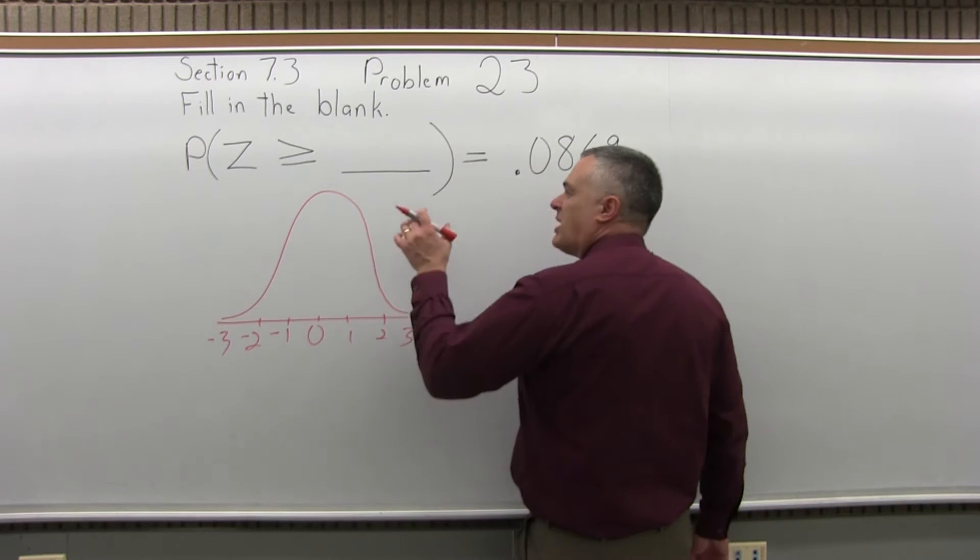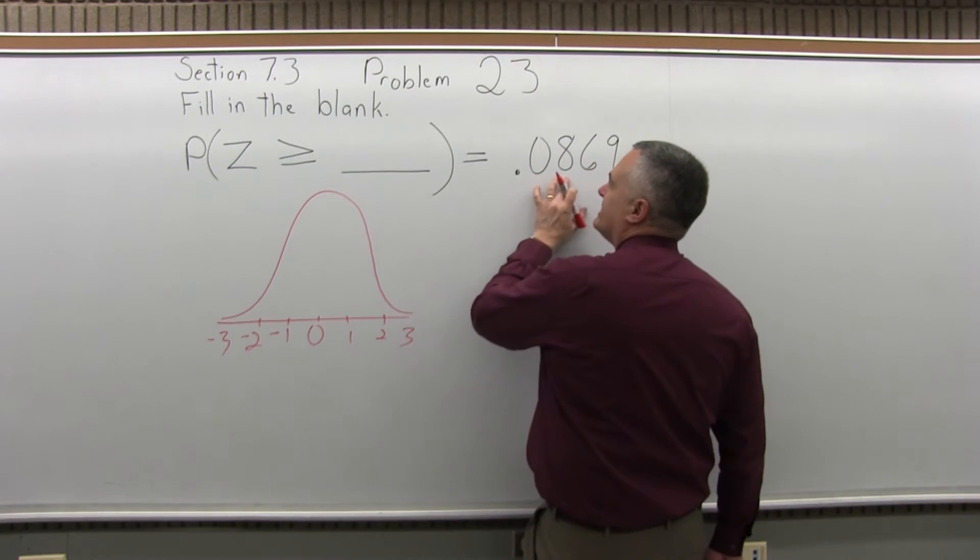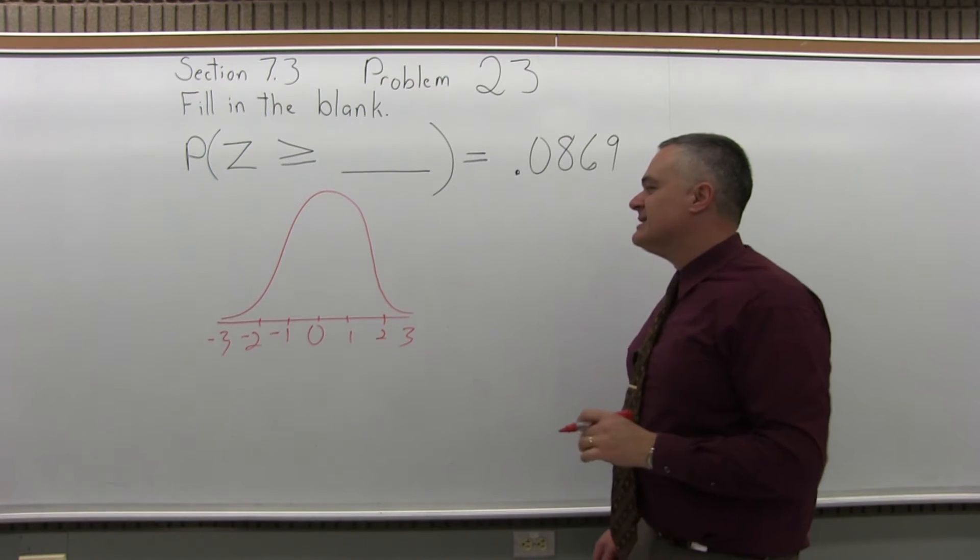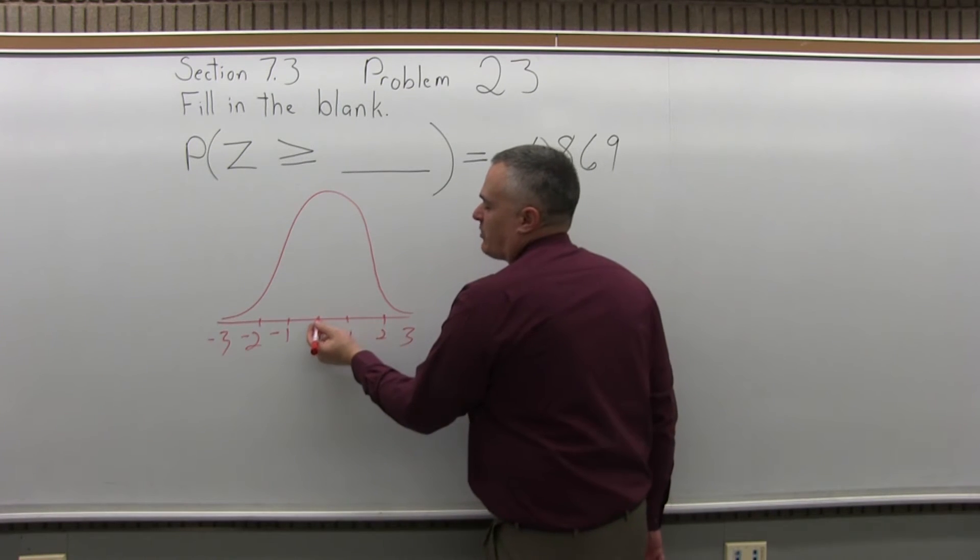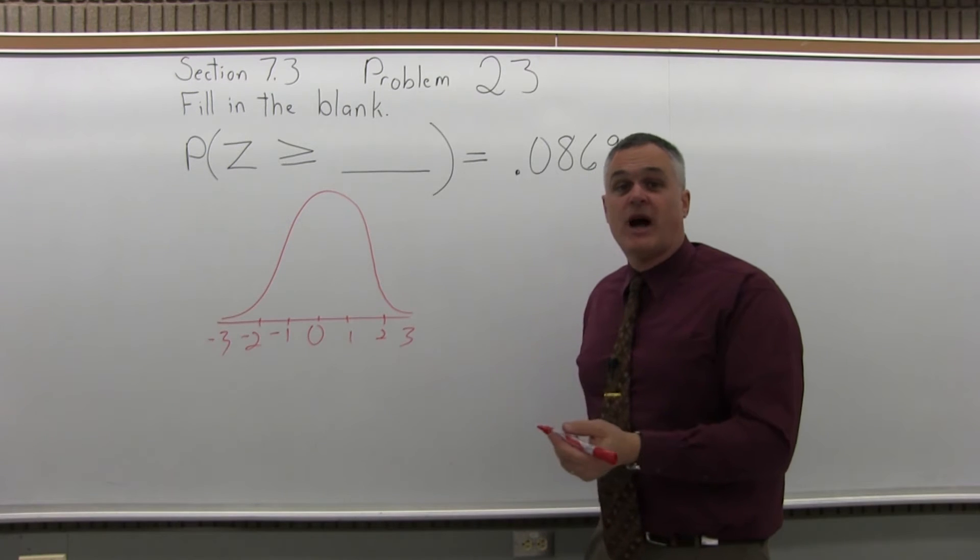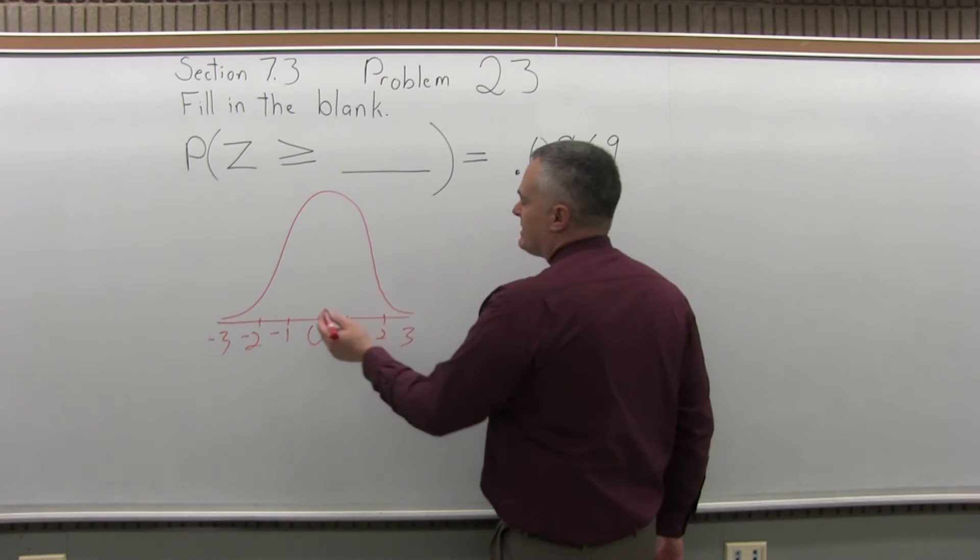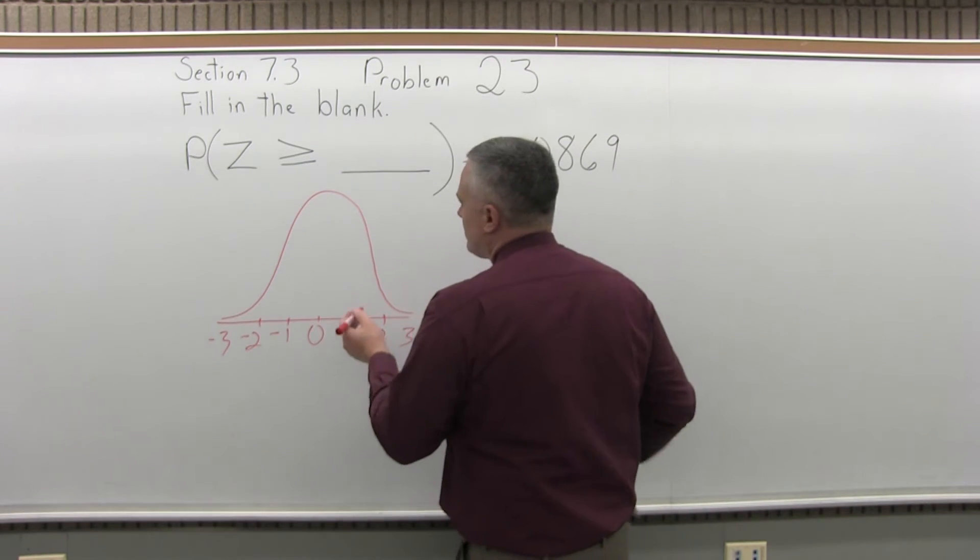So they're saying the probability that Z is greater than some number is .0869. At the halfway point, the probability of being greater than the halfway point is .5 or 50%. So .08, you're getting pretty far into the right end.